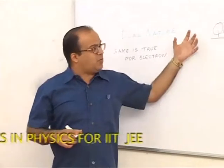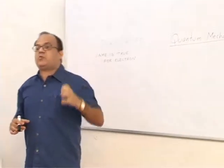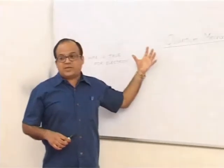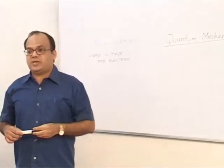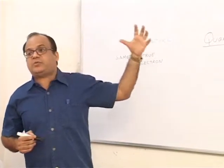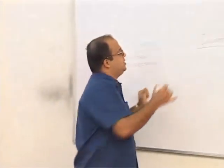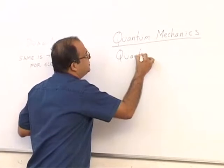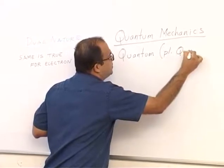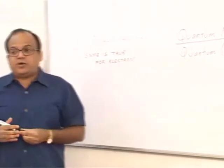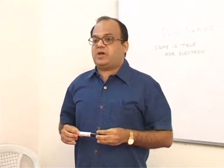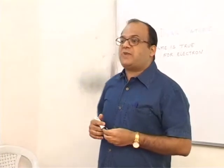In the same way, certain quantities exist only in a certain minimum amount or integer multiples of that minimum amount — they do not exist as fractions of that minimum quantity. Those quantities are said to be quantized. The minimum quantity associated with such a quantity is called the quantum of that quantity. So in the currency example, the quantum is one paisa.